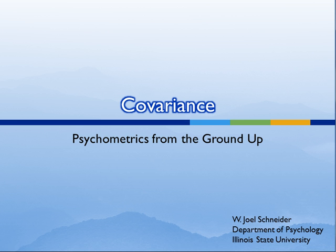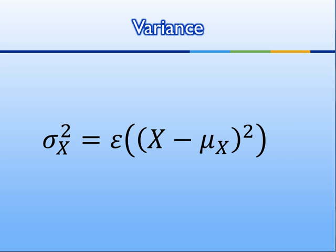As you might guess from the name, covariance is closely related to variance. As you'll recall from a previous tutorial, variance is the expected value of deviation squared. That is, we have some variable x, and from each score in x we subtract the mean of x. This gives us a deviation. The deviation is squared, and then we take the expected value of this, that is, the average squared deviation. The symbol for variance is sigma squared. Sigma is the standard deviation. Standard deviation squared is variance.